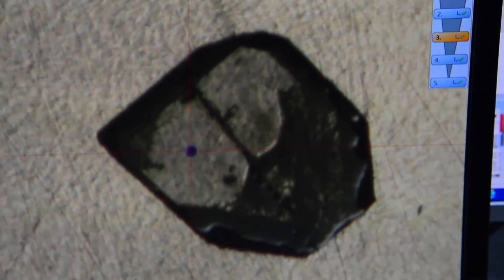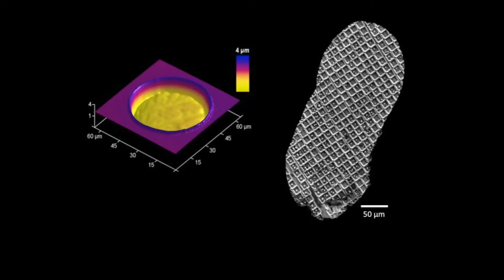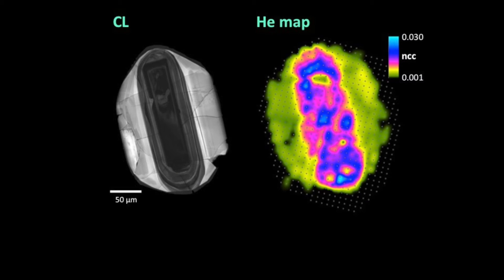Laser ablation microsampling has allowed us to probe very small volumes of minerals to quantitatively characterize the distribution of helium, uranium, thorium, and lead. These data have allowed the production of chemical maps that track the spatial variation of helium gas.